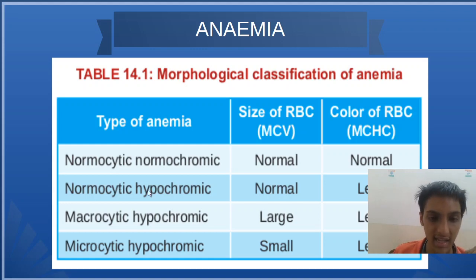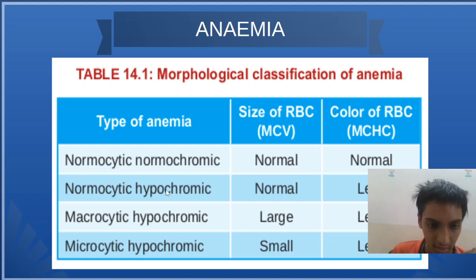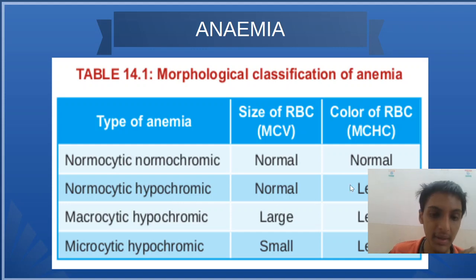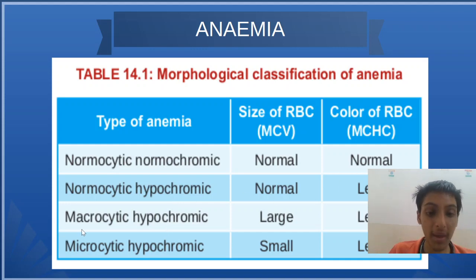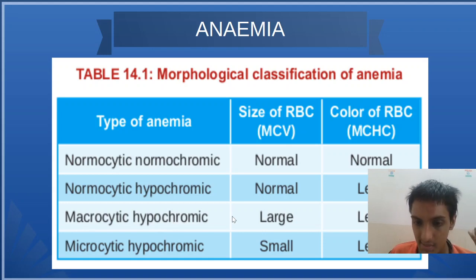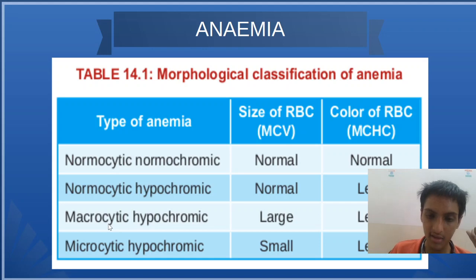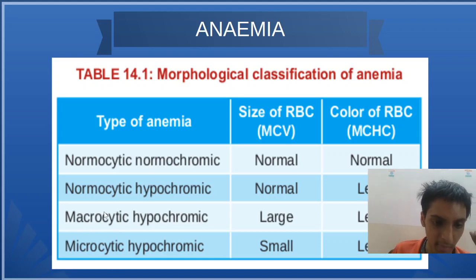In normocytic hypochromic, the color will be less. In the macrocytic type, the color will be less but the size is larger. Opposite of large is small — that is microcytic.